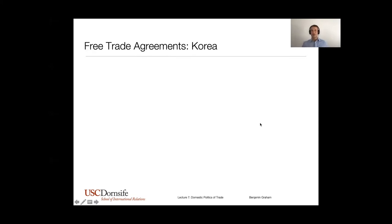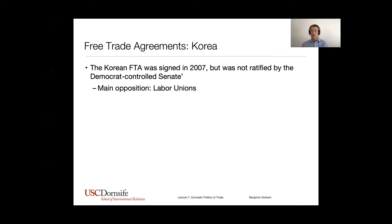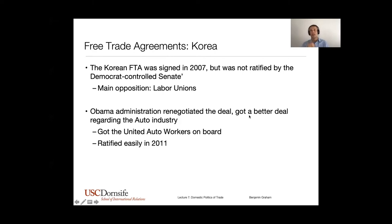Let's talk about some recent trade agreements the U.S. has signed. The South Korea Free Trade Agreement was first negotiated by the George W. Bush administration, but then rejected by the Democratic-controlled Senate. In the U.S. policymaking process, the executive branch negotiates and signs treaties, but they go to the Senate for ratification and won't enter into force unless the Senate ratifies. In this case the Senate refused, and the main opposition group were labor unions — a very important constituency for the Democratic Party. A pivotal group in particular was the auto industry, concerned about competition from South Korean manufacturers like Hyundai and Daewoo. GM and Ford were worried about letting those cars into the U.S. market tariff-free.